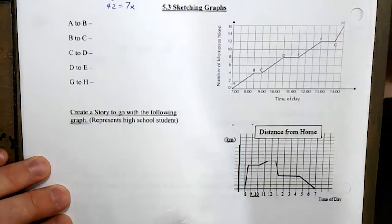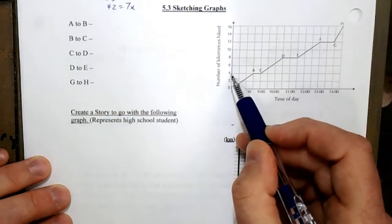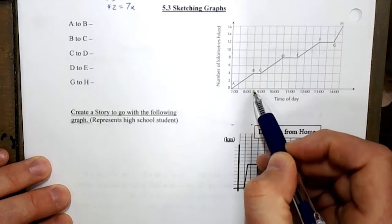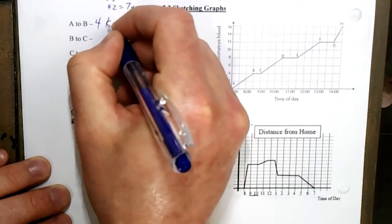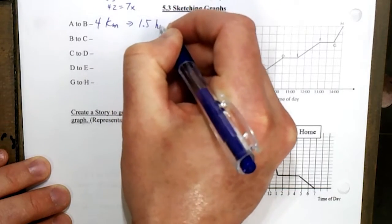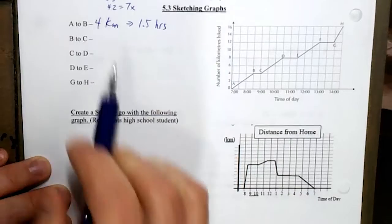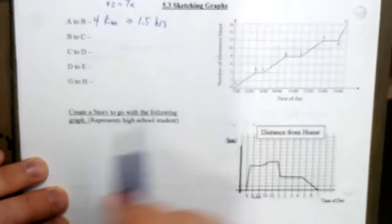The key thing is we have to read the graph and figure out what's happening. So we see that we're going up to 4 kilometers by 8:30, so we're doing 4 kilometers in 1.5 hours. We can see the speed that we're going based on those numbers.